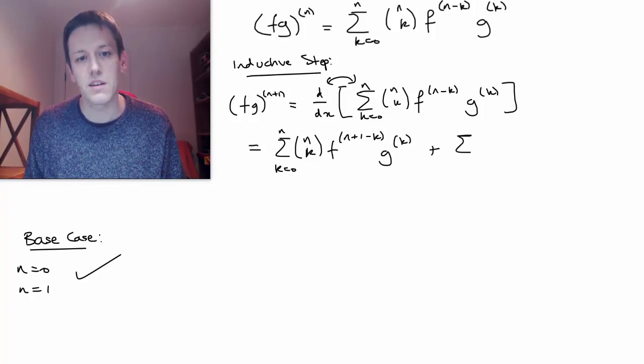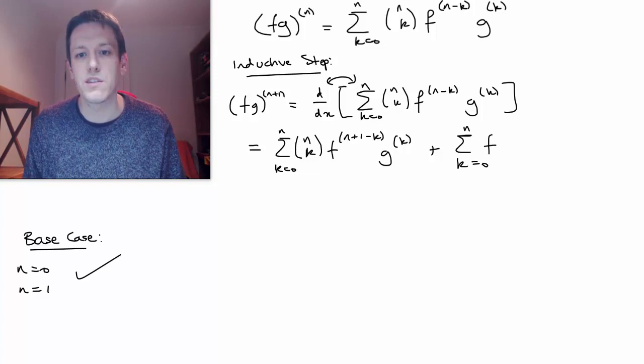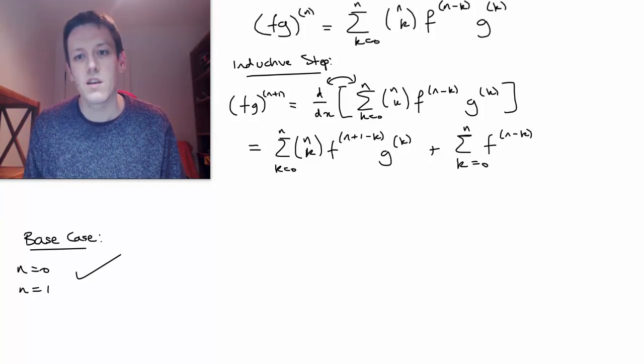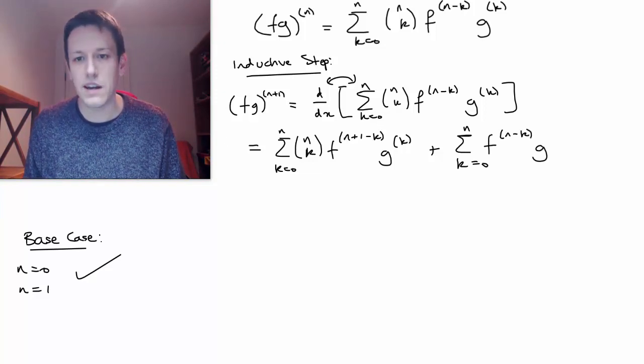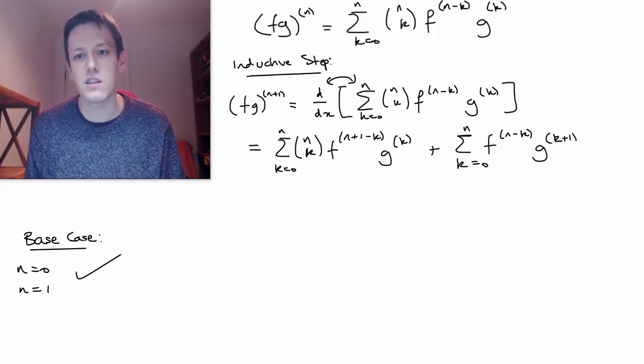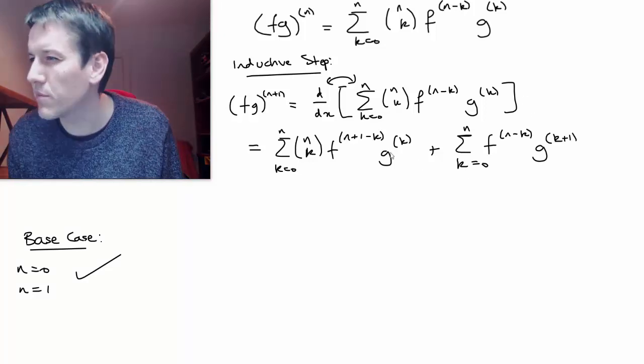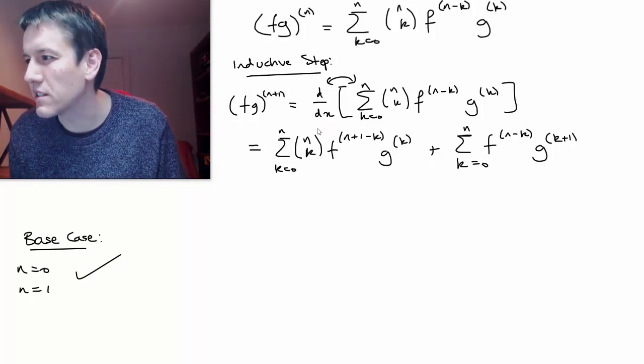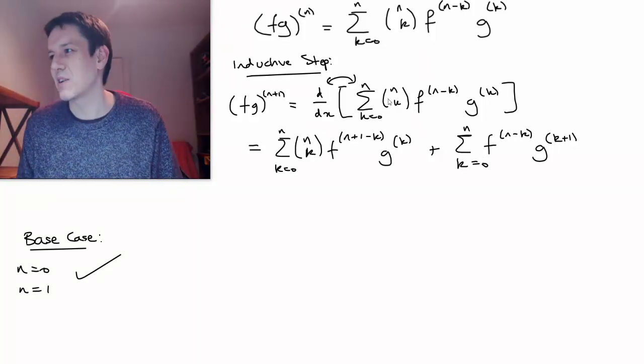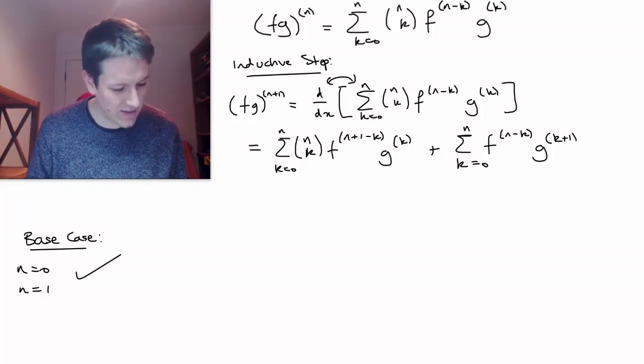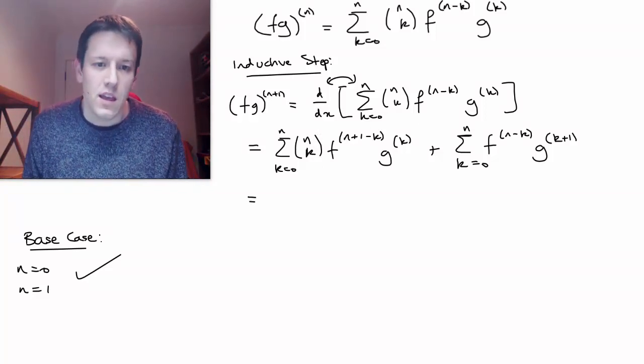So what I get is the sum from k equals 0 to n of n choose k, my binomial coefficient times f^(n+1-k), differentiating the f, and then I leave the g alone, and I'm going to get another sum for all the terms when I'm doing this the other way around, where I leave the f terms alone, and I differentiate the g function to get a k plus 1. Sorry if my handwriting is strange here, it's always just n's and k's, so it's turning around. Hopefully you can work out which one's which from what I'm saying as well.